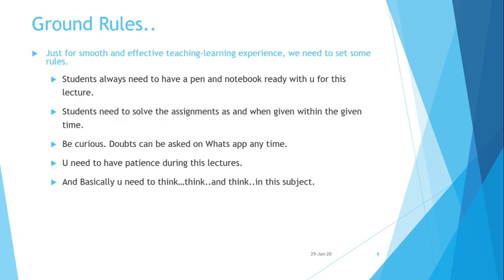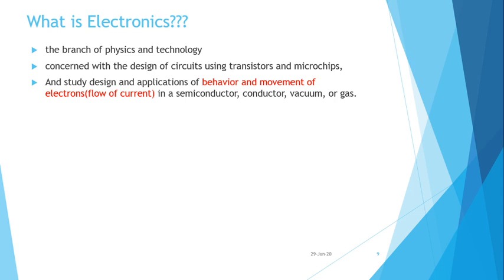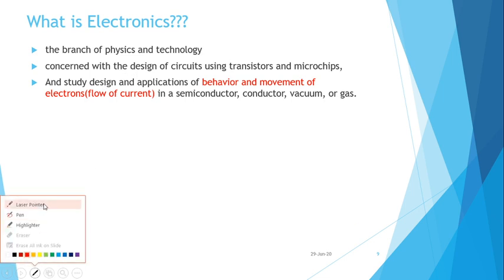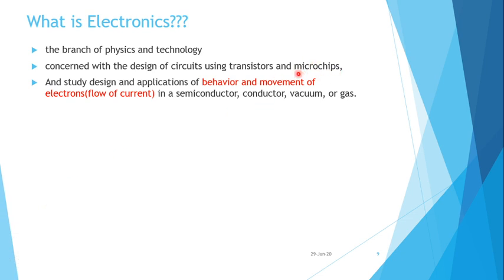As the subject is called digital electronics, let us first understand what electronics is. You may have studied this in your previous subject, Basic Electronics. Electronics is a branch of physics and technology concerned with the design of circuits using transistors and microchips. These microchips are themselves made up of transistors, and transistors are semiconducting devices.